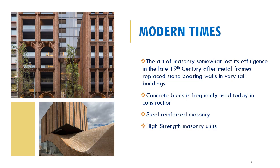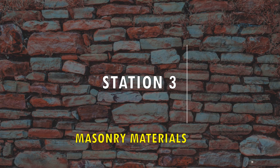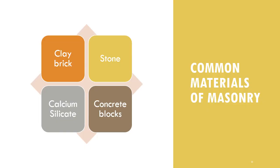Station 3 is where I'll be talking about the different materials that can be used in masonry structures. There are four main types: your masonry structure can be made of clay bricks, stone, calcium silicate bricks, or concrete blocks, and we'll be exploring each individual material separately.